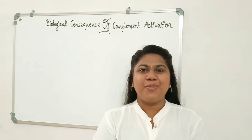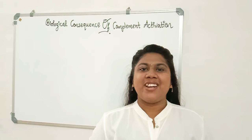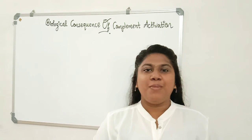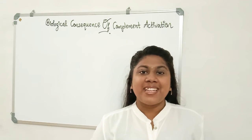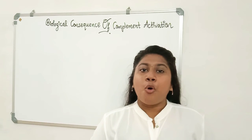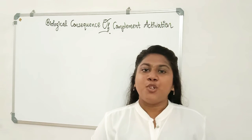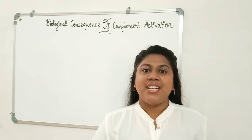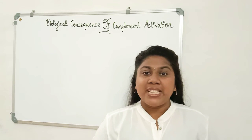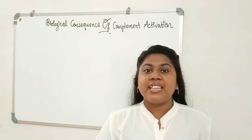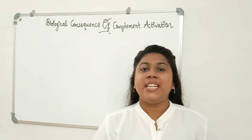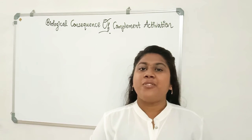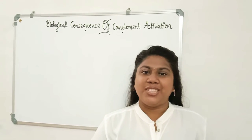Hi friends, welcome to Superbiology. In this video we are discussing the biological consequences of complement activation. We all know that complements are a group of serum proteins. These are either activated by antigen-antibody complex or by bacterial endotoxins. On its activation, the C3B portion of complement binds with a receptor. C3B has the receptor for binding with B cells, and on binding, it secretes antibodies, which help in the defense mechanism. Let's look at the 5 major biological consequences of complement.